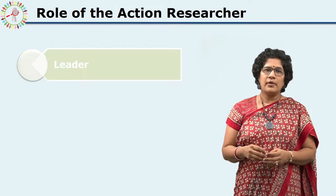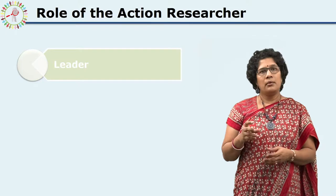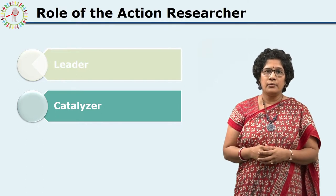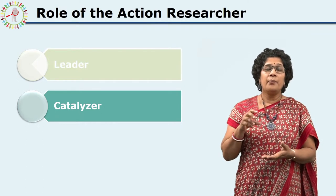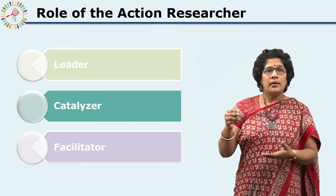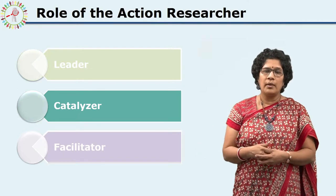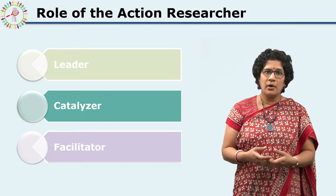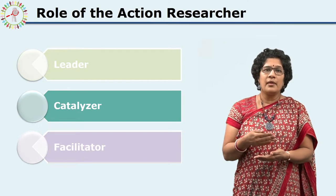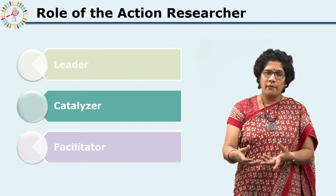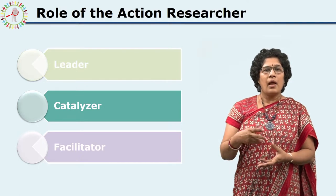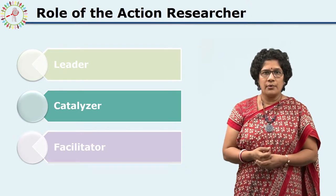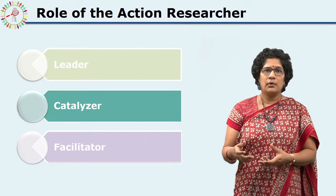The next role the action researcher plays is that of a catalyser. As we know the role of a catalyst in a chemical process — by its mere presence it accelerates the reaction between two elements. Similarly, not only by mere presence but also through contribution in terms of the action plan, the action researcher starts improving the situation or takes steps for improving it, and thus plays the role of a catalyser.